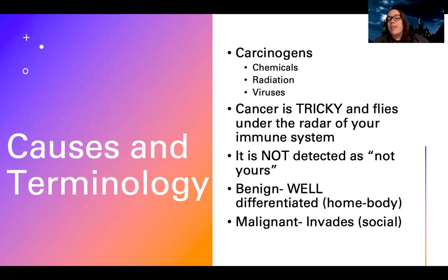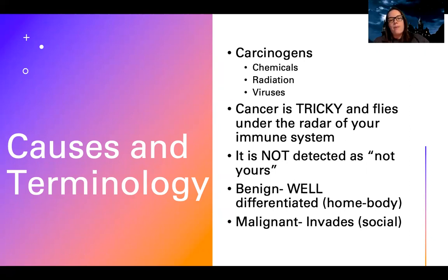Cancer is very tricky — it flies under the radar of your immune system. Even though cancer cells are not normal, they appear to be normal because cancer has a lot of ways to trick your immune system. Your body doesn't detect them as foreign. It still thinks, 'oh, this is me' — this looks enough like normal cells that the body doesn't recognize it as abnormal.